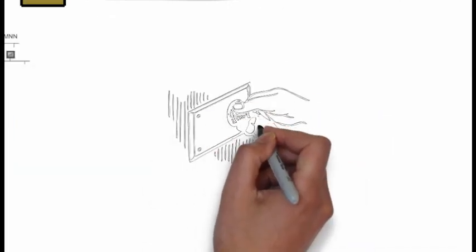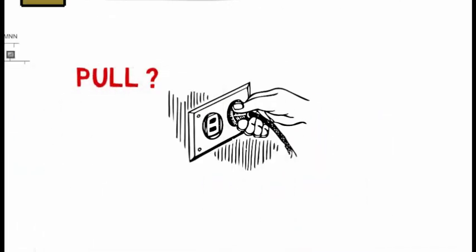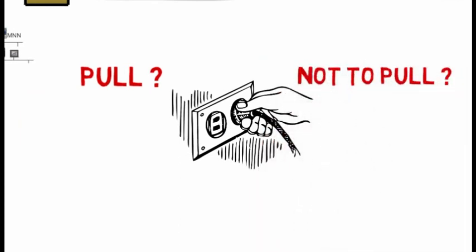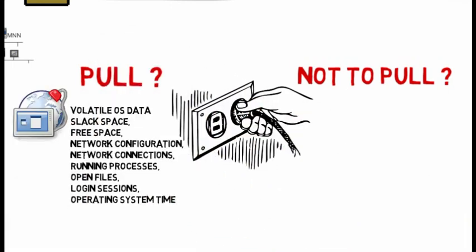At a digital crime scene, one of the first questions is: should we pull the plug or not pull the plug on a computer that is live and on? Pulling the plug could mean we lose volatile operating system data such as slack space, free space, network configuration, network connections, running processes, open files, login sessions, operating system time, and other electronic evidence. I built a tool called Vertool — Volatile Evidence Retrieval Tool — which can run from a pen drive and dump a lot of volatile evidence onto it with a couple of clicks.